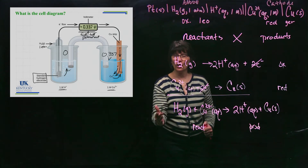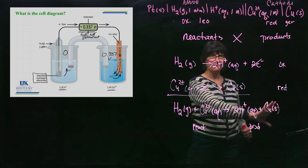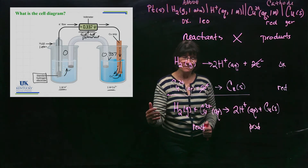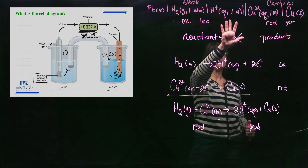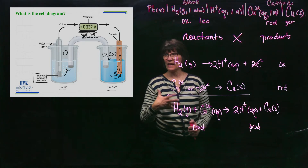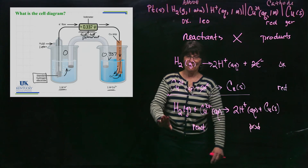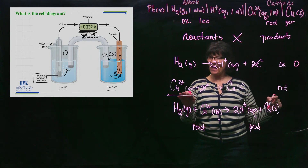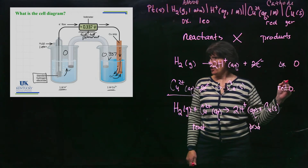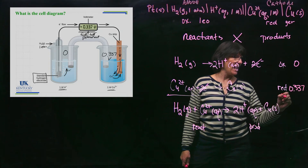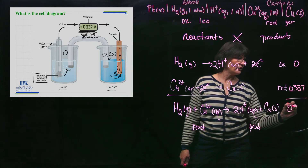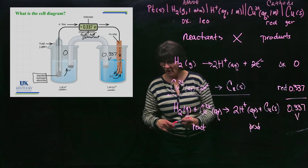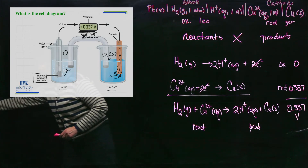If you see a cell diagram, there is quite a bit of work to do to come up with the overall reaction — you don't just look at it and know; you must determine what's happening at the anode and cathode. The cell potential for the SHE is zero; the half-cell potential for copper is 0.337 V. Adding those together gives the overall cell potential of 0.337 V, which is what's read off the voltmeter.